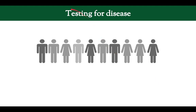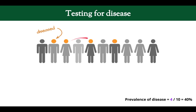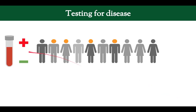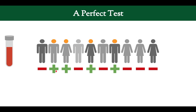We're going to talk about testing for disease. Let's say we have a population or a sample of 10 patients, and some of them have a disease — we don't know which ones. The diseased ones are marked with orange heads. The prevalence of disease in this population is 4 over 10, so 40%. We also have a test, and a perfect test would be positive whenever the patient has disease and negative when they don't.